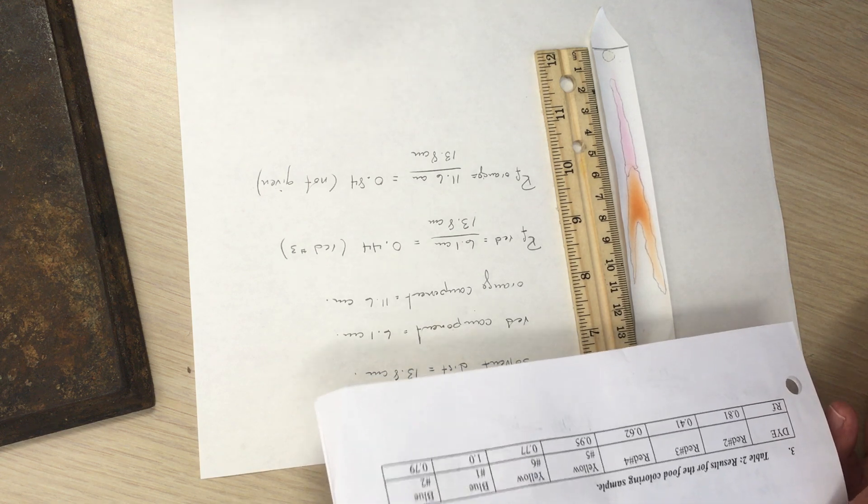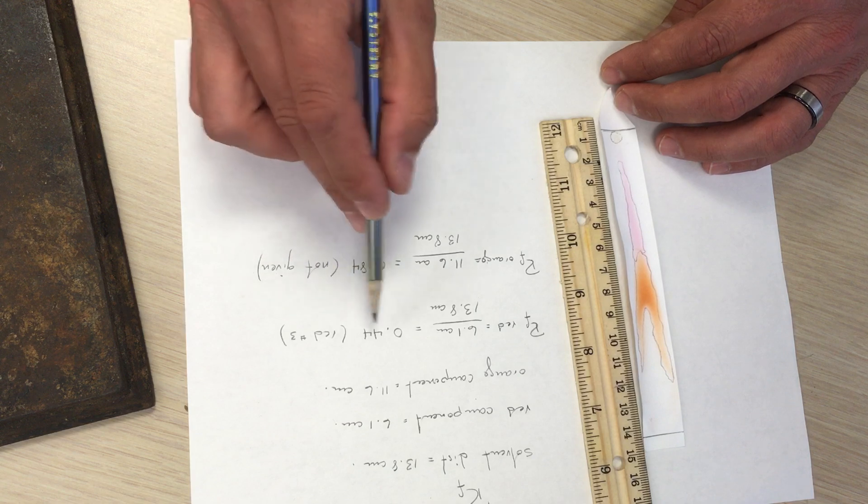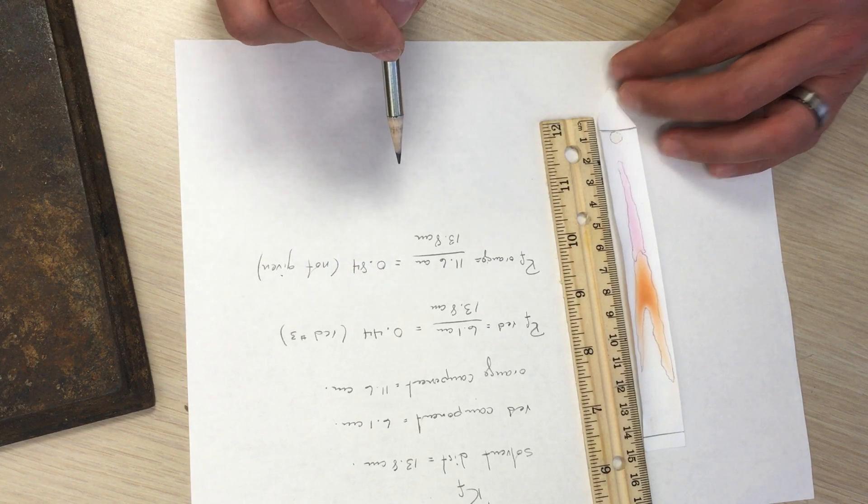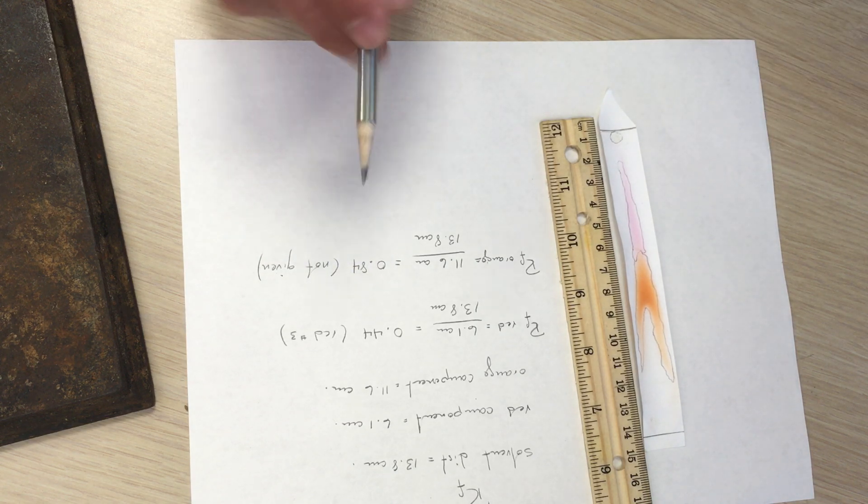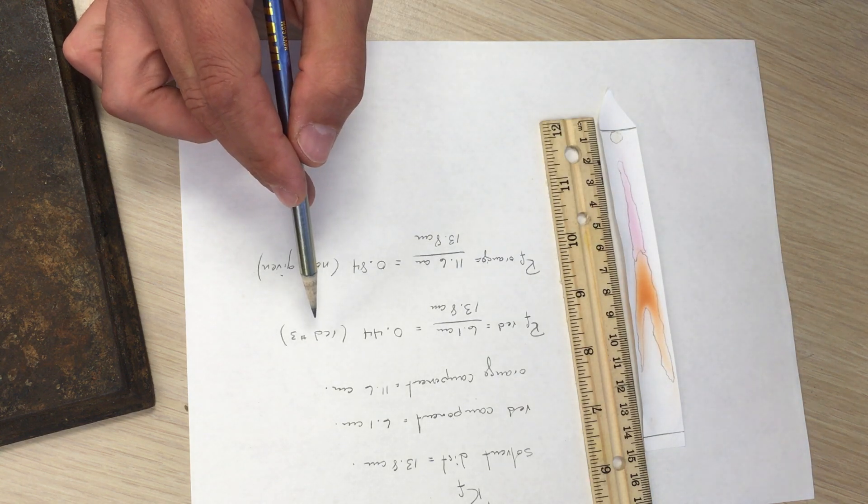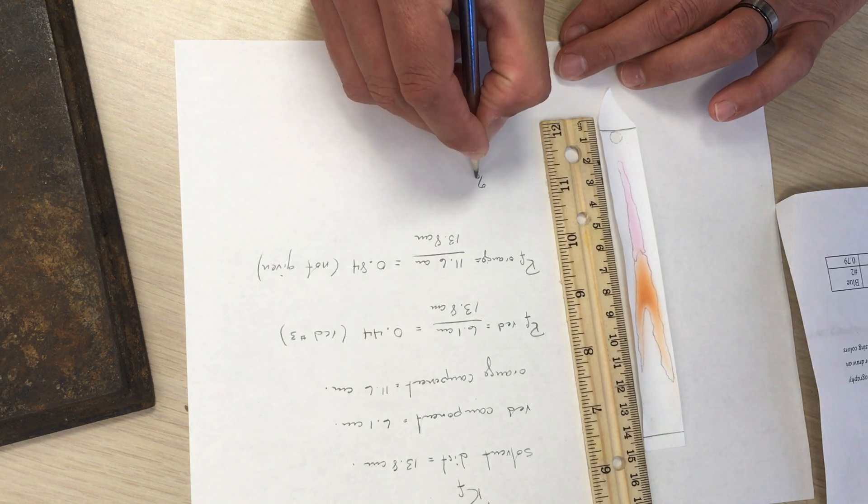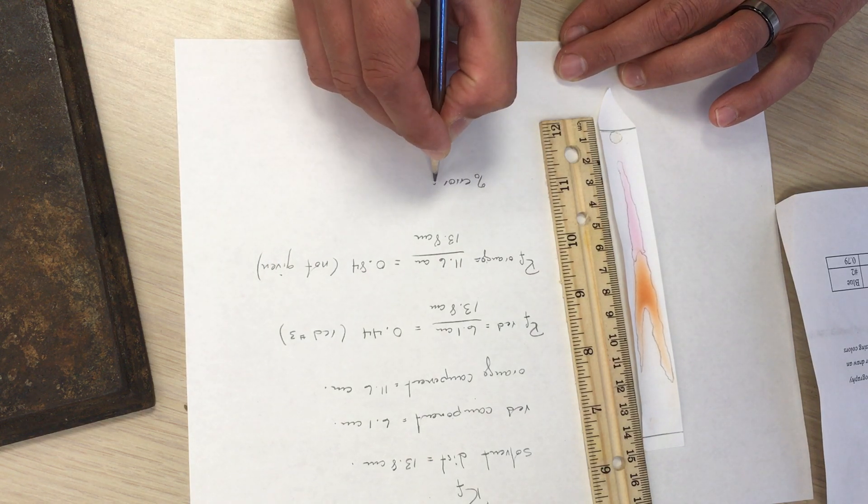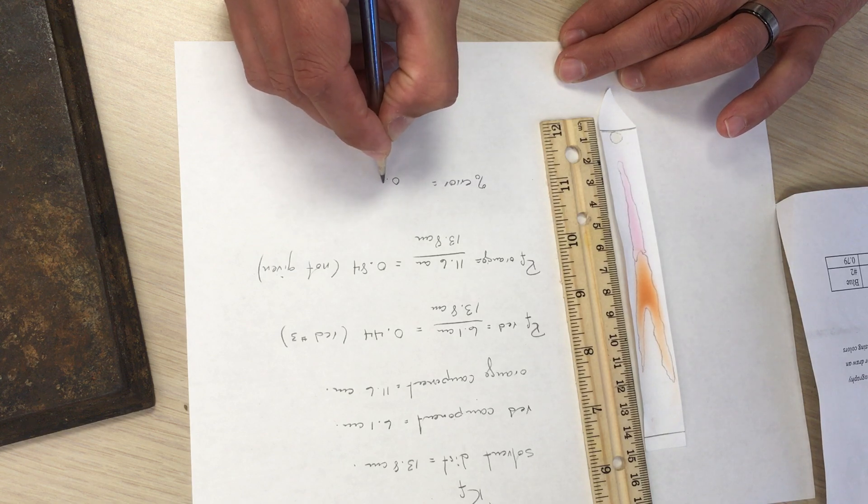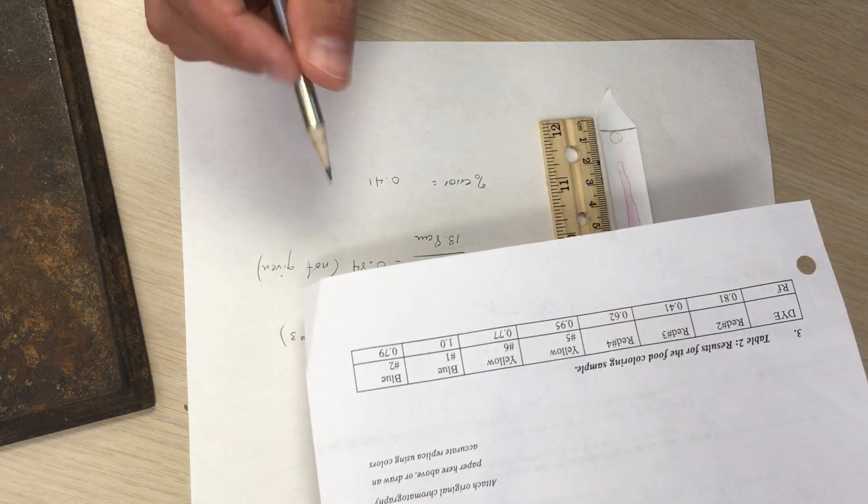So we can calculate how far we are off the red number three by calculating our percent error. And to do that, we're going to use the expected value. Assuming that it is red number three, we would have expected a value of 0.41 as given on the sheet here.